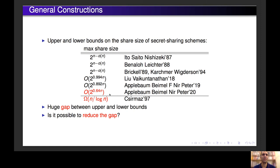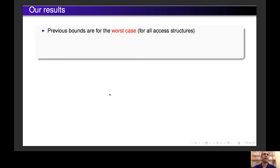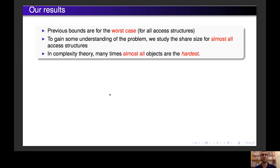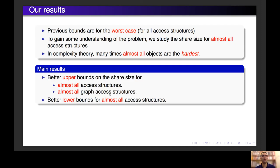We would like to know if we can reduce the upper bound or find better lower bounds — that was our starting point. Observe that the bounds presented before are upper bounds for the worst case, that is, upper bounds for all access structures. To gain some understanding of this problem, we studied the share size for almost all access structures, because in complexity theory, many times almost all objects are the hardest, and we want to know if this is the case for secret sharing. In this work, we found better upper bounds on the share size for almost all access structures and almost all graph access structures, and we also found better lower bounds for almost all access structures.